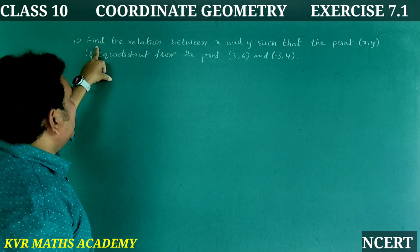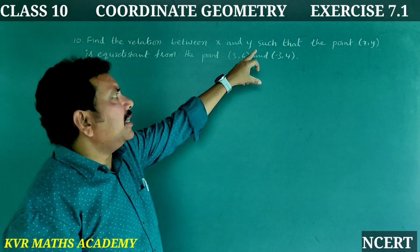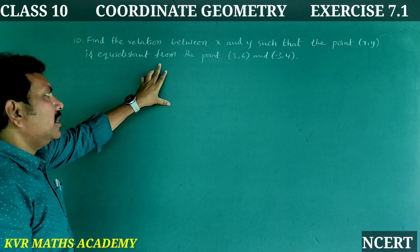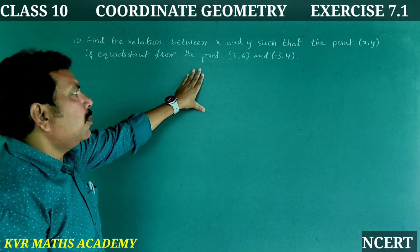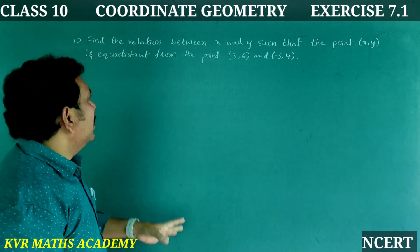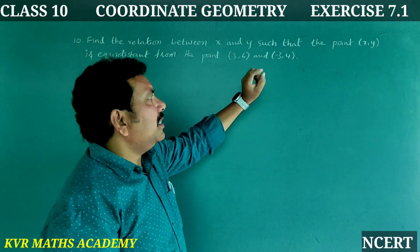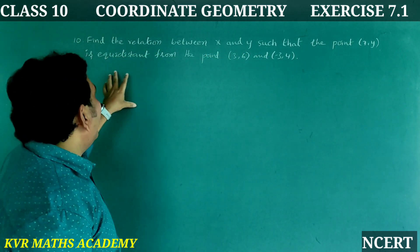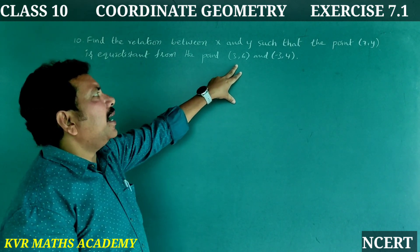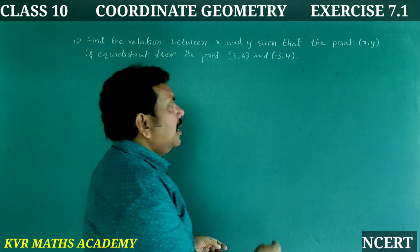This is the tenth and final question in this exercise. Find the relation between x and y such that the point (x, y) is equidistant from the point (3, 6) and (−3, 4).